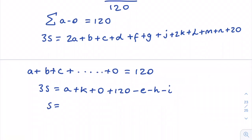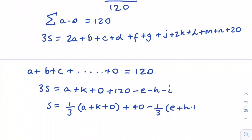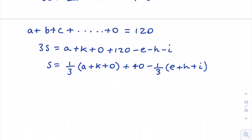Dividing by 3: S = (a + k + o)/3 + 40 − (e + h + i)/3. To maximize S, the corner values a, k, o must be as large as possible, and the center values e, h, i must be as small as possible.